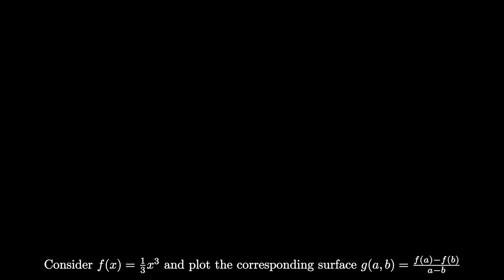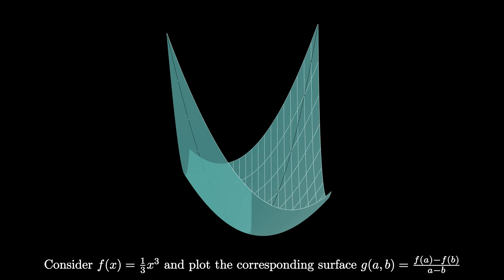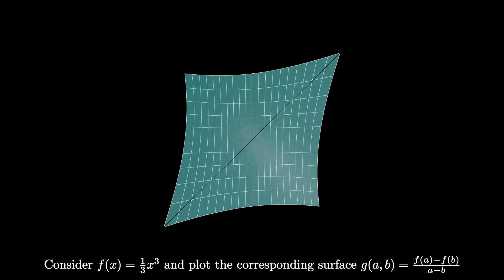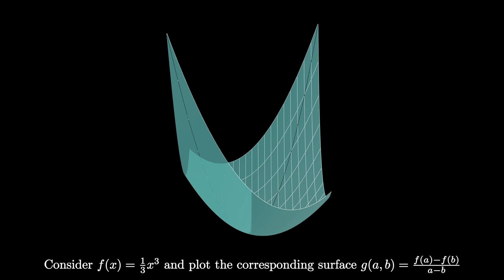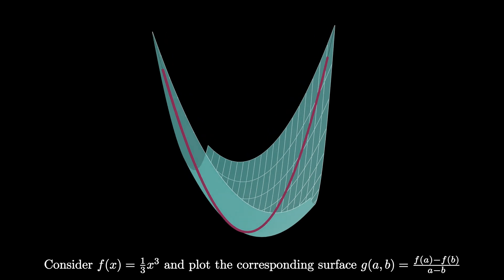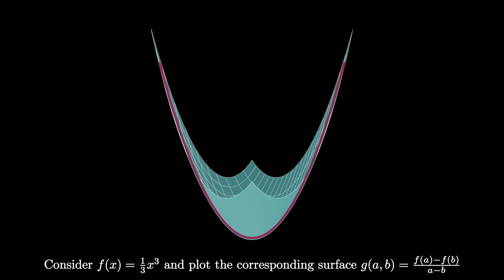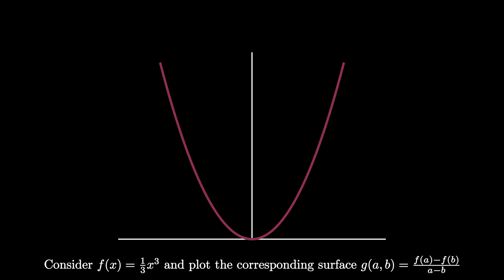Let's see one more example. Consider the function f of x equals one-third x cubed, and plot the corresponding surface g of A and B, which is f of A minus f of B over A minus B — the average rate of change surface plot. Notice again we see a discontinuity along the line A equals B. If we fill in those points of discontinuity with a curve and look at it from the right angle, we see a familiar continuous curve. In particular, the derivative of f of x equals one-third x cubed is the parabola y equals x squared. Taking the limiting process where the points A and B approach x comma x of the average value surface, we get the derivative of one-third x cubed.